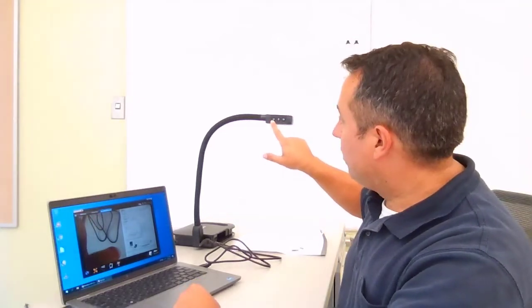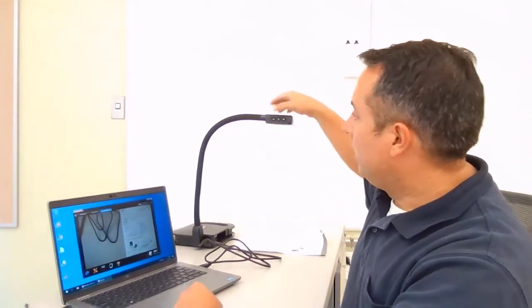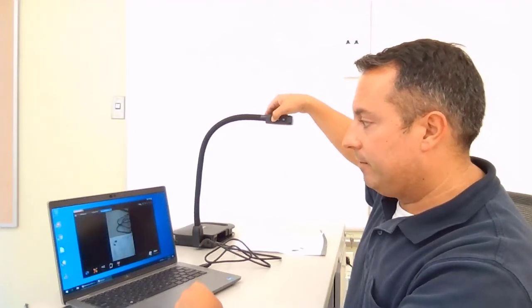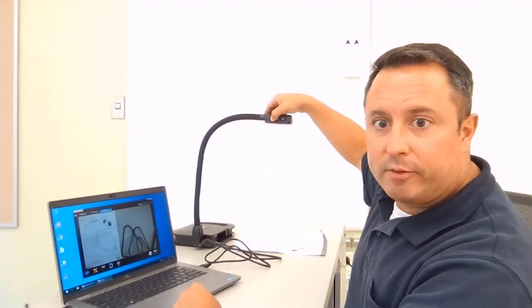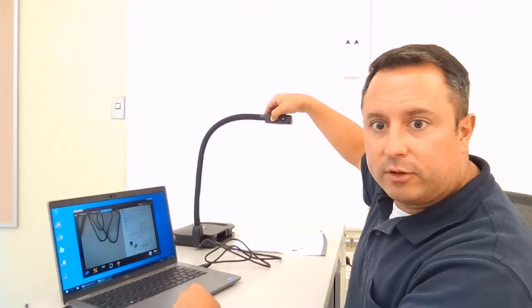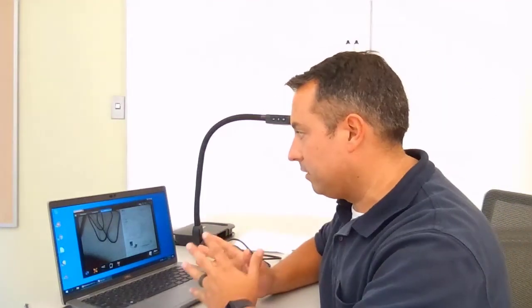In this case it is facing the right way. If it's not facing the right way, on the side of your document camera you've got an orientation button. If you press the orientation button it's going to flip it around. You can see that flipping around in the picture there.